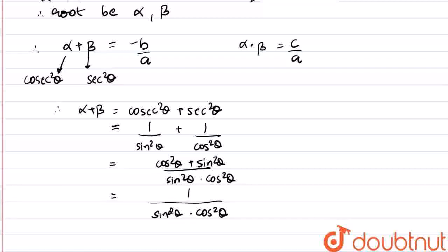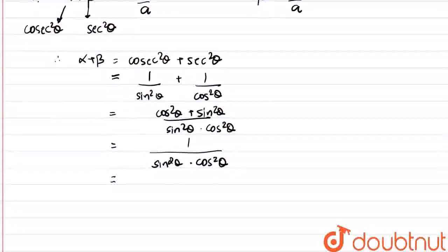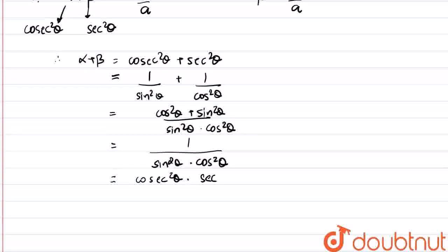Now as cos²θ + sin²θ = 1, we get 1/(sin²θ · cos²θ). Now 1/sin²θ is cosec²θ and 1/cos²θ is sec²θ. Thus we get cosec²θ · sec²θ, which is the product of the roots. Therefore α + β = α · β.